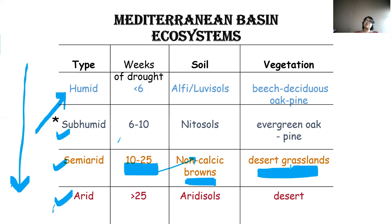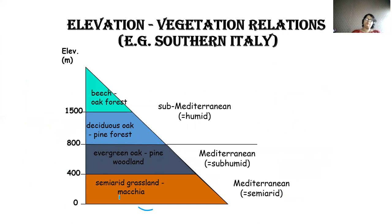In arid conditions, the water content becomes considerably less, the soil is Aridisol, and vegetation is completely desert. This picture relates to the previous slide, showing the different types of plants growing in Mediterranean, sub-Mediterranean, humid, sub-humid, and semi-arid regions.